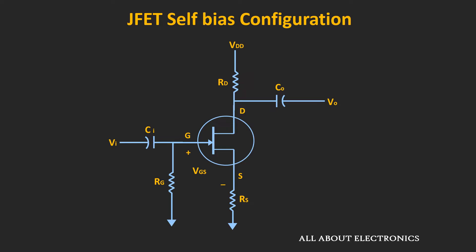This self-bias configuration has certain advantages over the fixed bias configuration. This configuration requires only a single power supply. The resistor RS is connected at the end of the source terminal, and the voltage drop across RS determines the gate-to-source voltage for the JFET. So there is no need to apply an external biasing voltage to generate this gate-to-source voltage — that is why this is called the self-bias configuration.